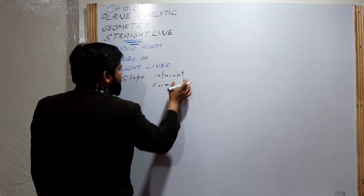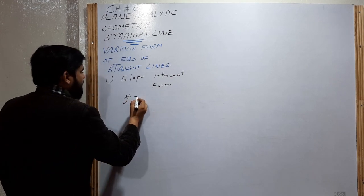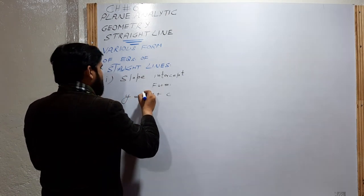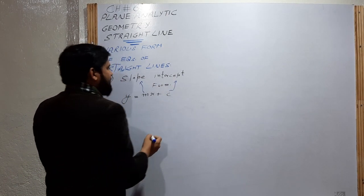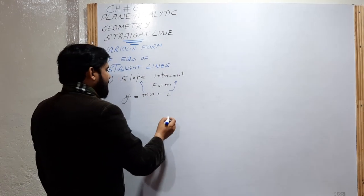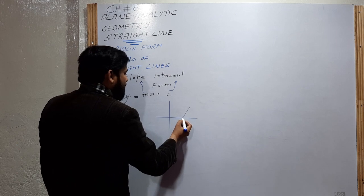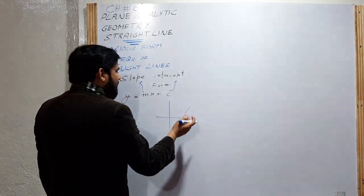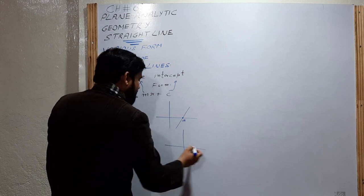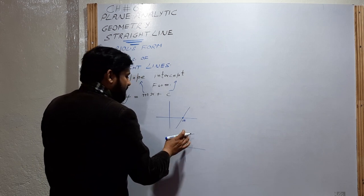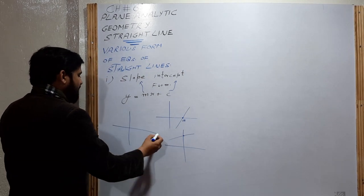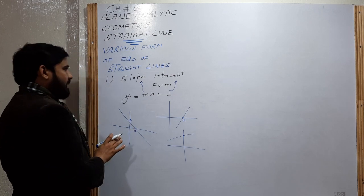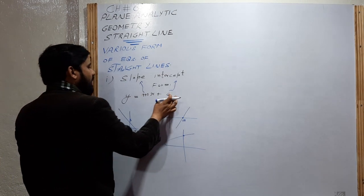The first form is the slope-intercept form: y = mx + c. Here m represents the slope and c represents the intercept. The intercept is where a line cuts on the x-axis or y-axis — there can be an x-intercept and a y-intercept. Simply, slope-intercept form means y = mx + c.